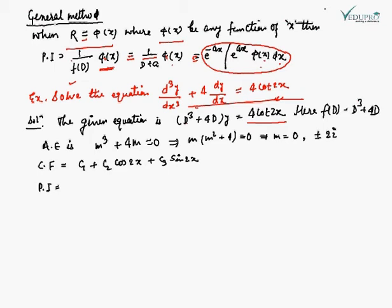First we find the auxiliary equation. The auxiliary equation is m³ + 4m = 0. Taking m common, this becomes m(m² + 4) = 0. So here m has one real root and two complex roots.